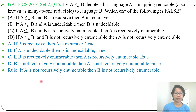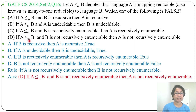The rule is: if A is Not Recursive Enumerable then B is Not Recursive Enumerable. So the answer is D — if A is Mapping Reducible to B and B is Not Recursive Enumerable, then A is Not Recursive Enumerable is False. Options A, B, and C are True. Answer is D. Thank you.